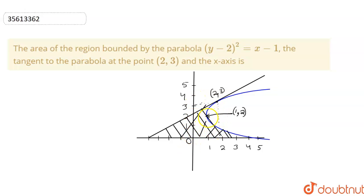Now, how do we identify our points? Looking at the question, this is our vertex. Our parabola has vertex at (1, 2). If we put those values in, we get 0, which is verified. So this is our vertex.